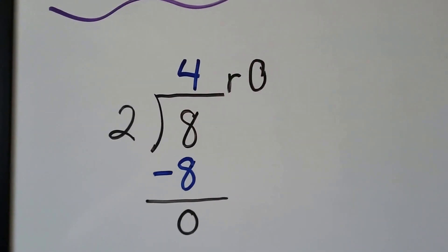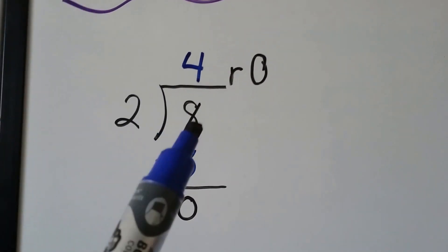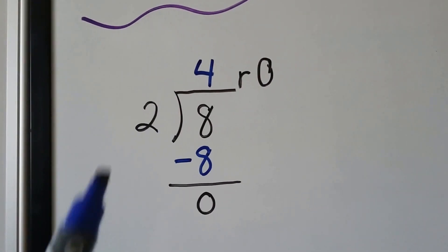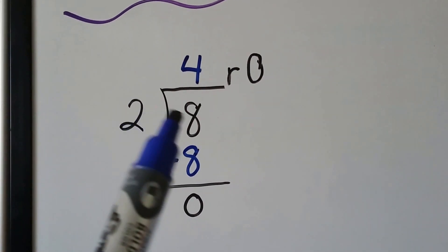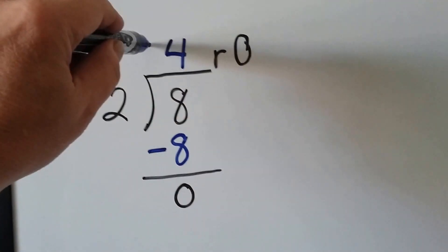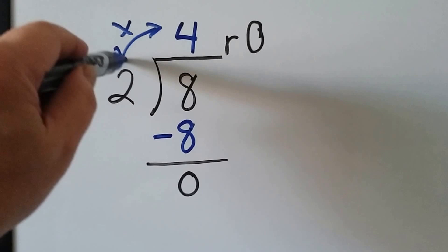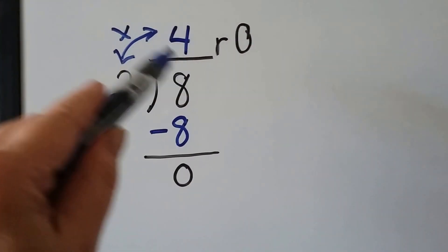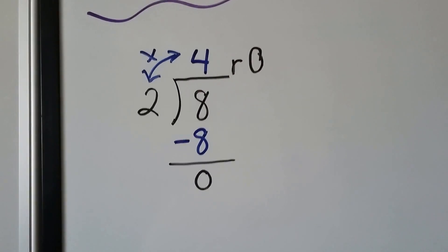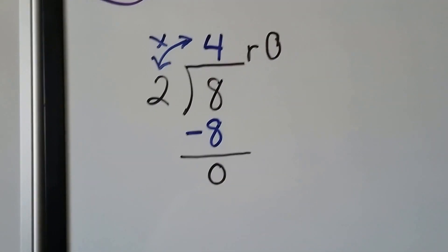If we have a problem like this, where we need to divide 8 by 2 — this is the dividend, that's the divisor — we ask ourselves, how many times can 2 fit into 8? Well, 2 times 4 is 8. We write it here and subtract it from the dividend. We get a 0, so our remainder is 0.